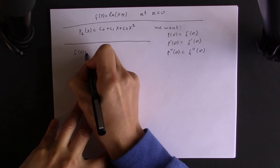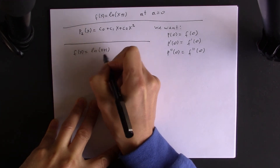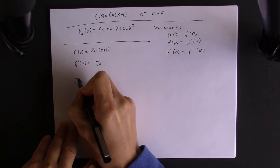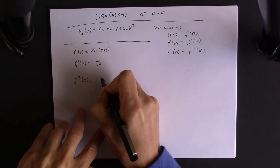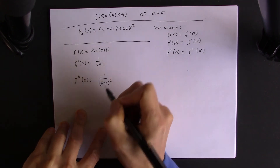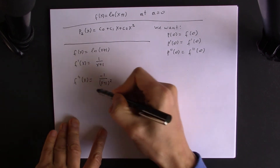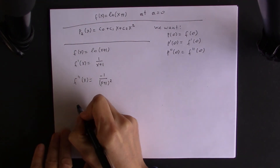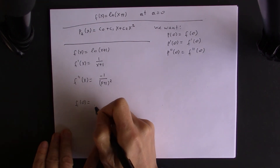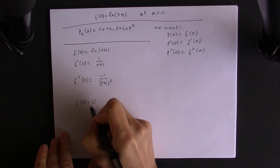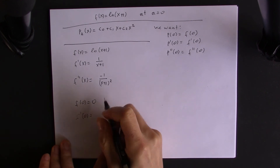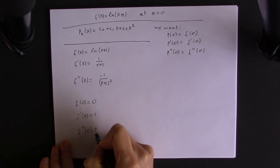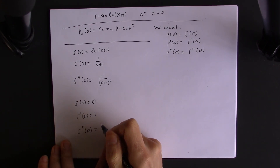Our function is ln(x+1). The derivative of the function is 1 over (x+1), and the second derivative is negative 1 over (x+1) squared. Evaluating at a equals 0: f(0) equals ln(1) equals 0, f'(0) equals 1, and f''(0) equals negative 1.